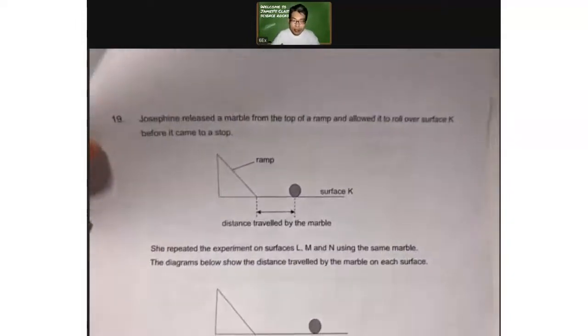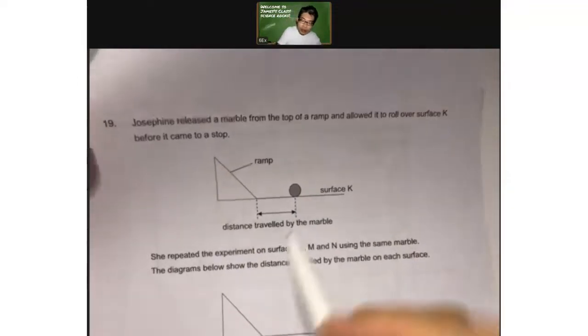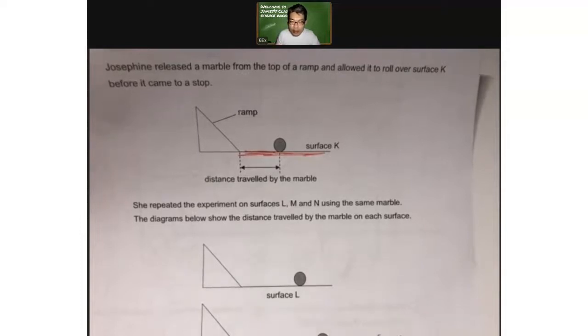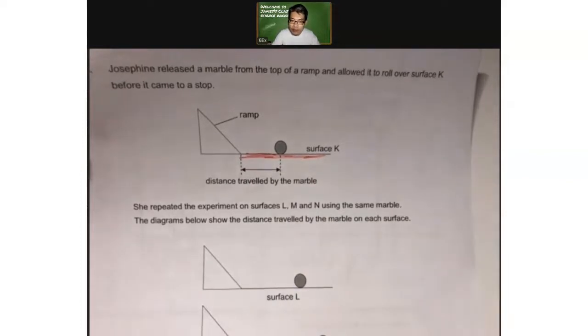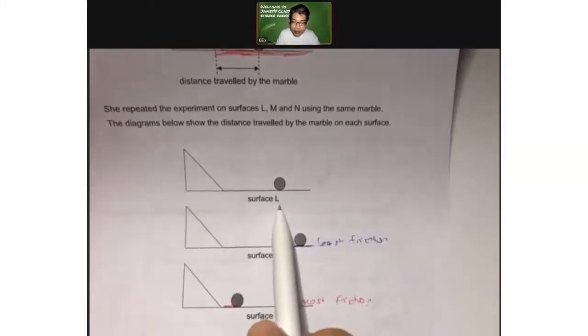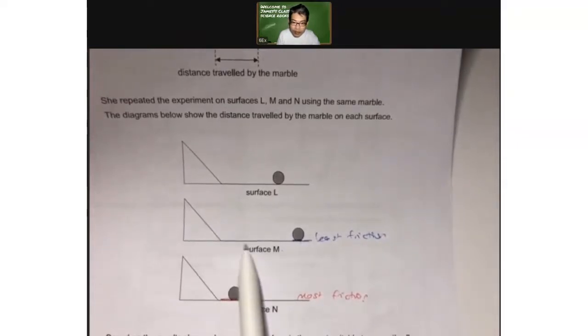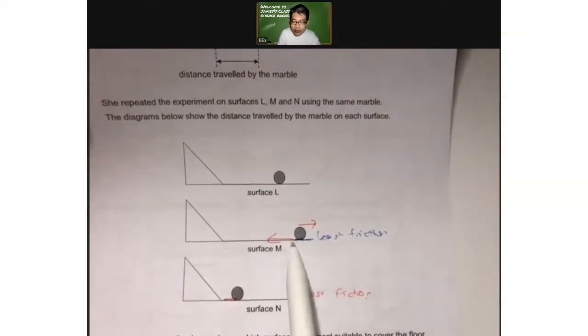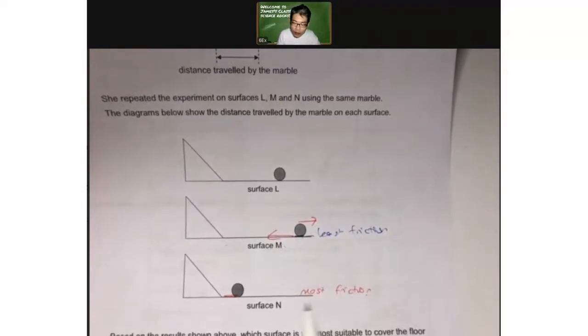Let's go to question 19. Now Josephine released the marble from the top of the ramp and allowed it to roll over surface K before it came to a stop. So this is surface K. Now she will repeat the experiment on surfaces L, M and N. So by changing the surfaces that the marble is rolling on, she's changing the amount of frictional force that is generated when the marble moves across the different surfaces. The diagram below shows the distance travelled by the marble on each surface. So as you can see, on surface L, it travelled to this part. On surface M, it travelled the furthest. On surface N, it travelled the least. So it can travel very far, means that there must be very little friction. Remember this is the direction of motion. Frictional force opposes motion. Since it can travel very far, the frictional force must be very little, the least. And since this one couldn't travel very far, the frictional force between the marble and the surface must be the greatest.